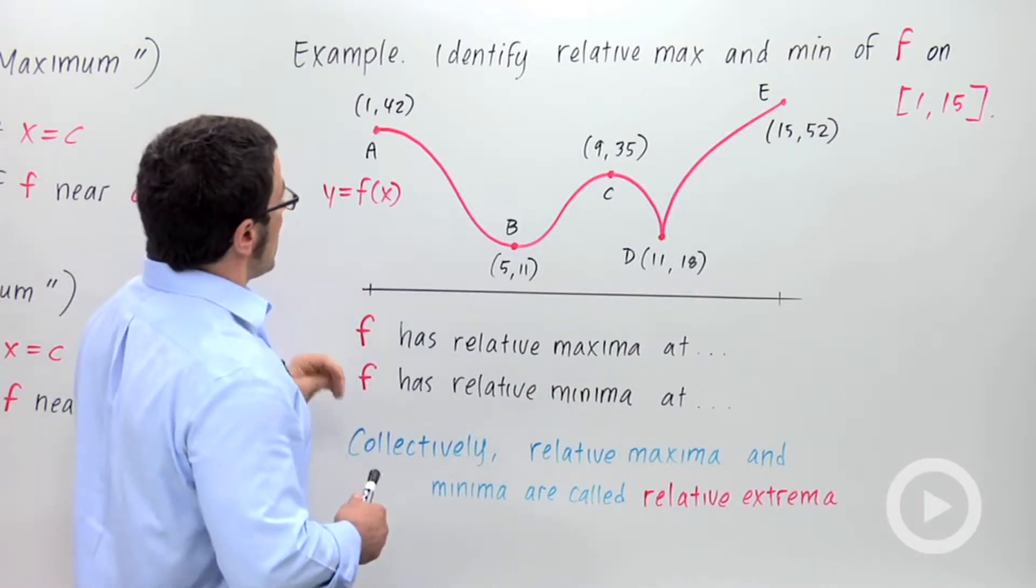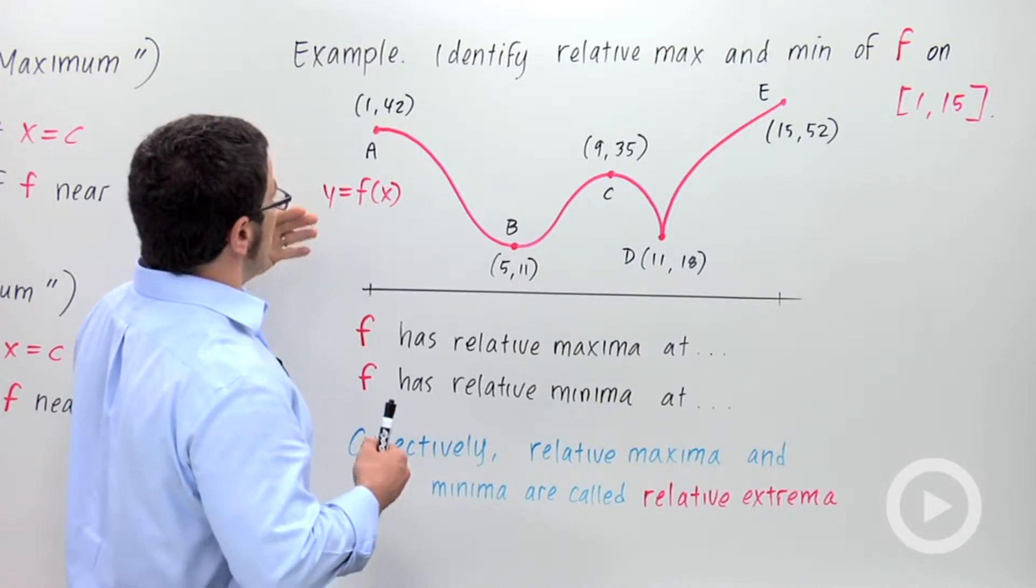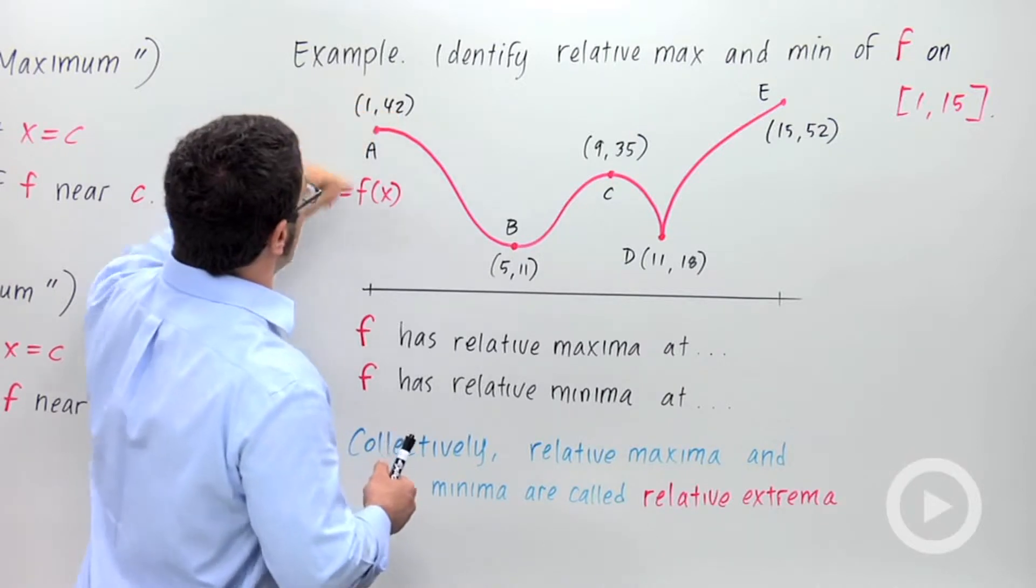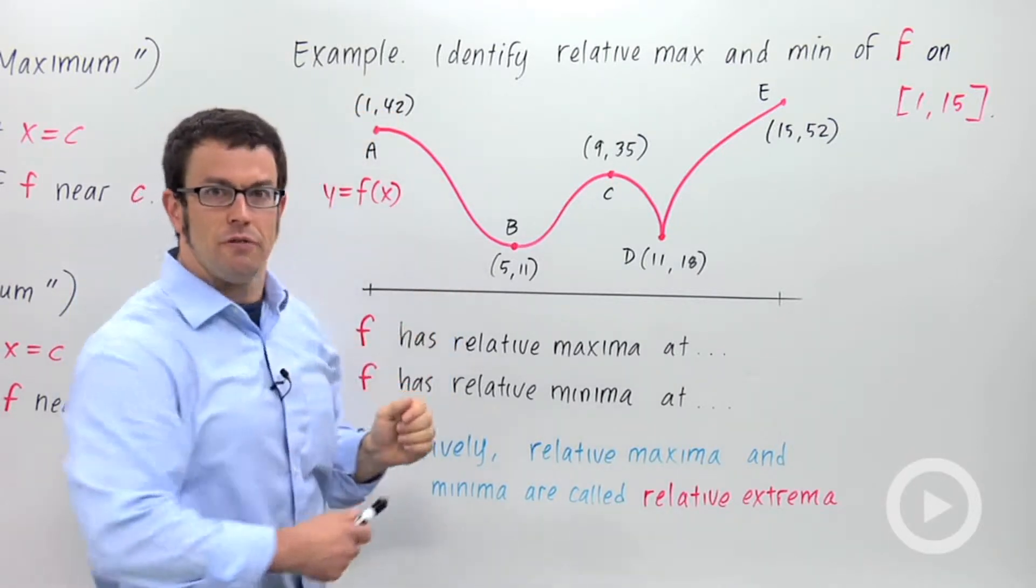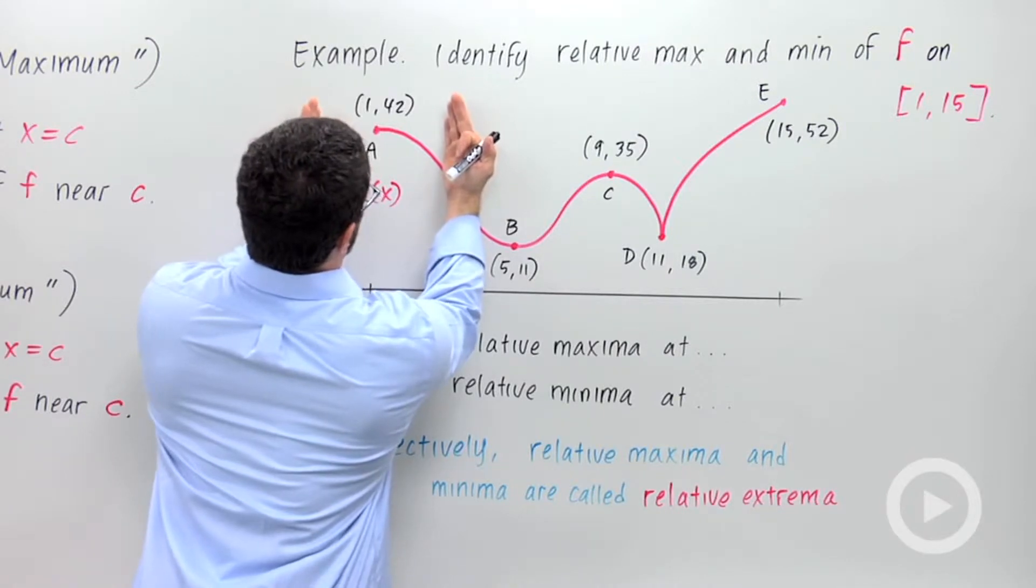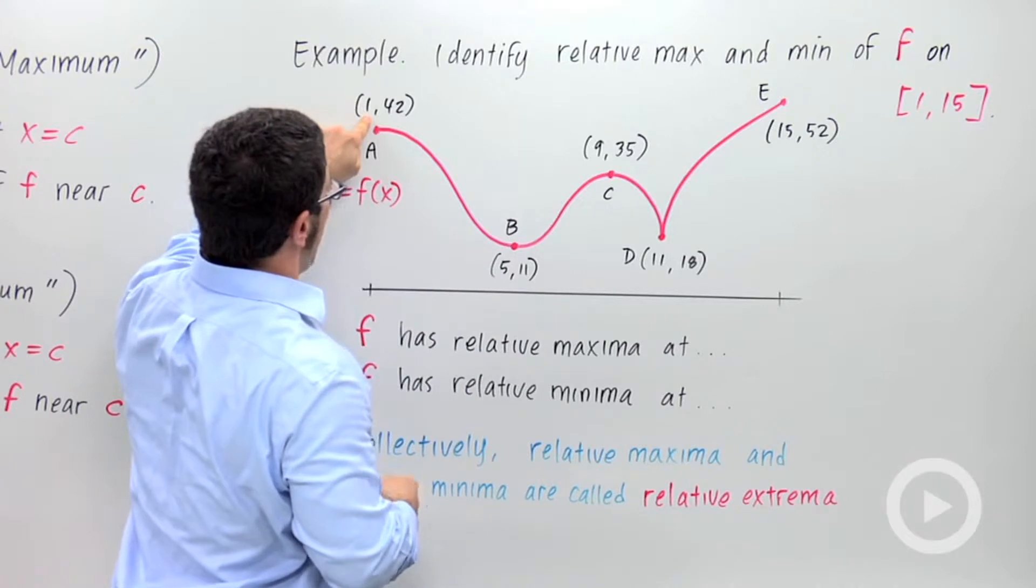Well, there's a bunch of them. Now, remember that a relative maximum is the value f of c, which is larger than any value nearby. So here, this value 42 is a relative maximum for the function f. If you look in this little neighborhood here, this is the highest point. That makes it a relative maximum. So there's a relative maximum at x equals 1.